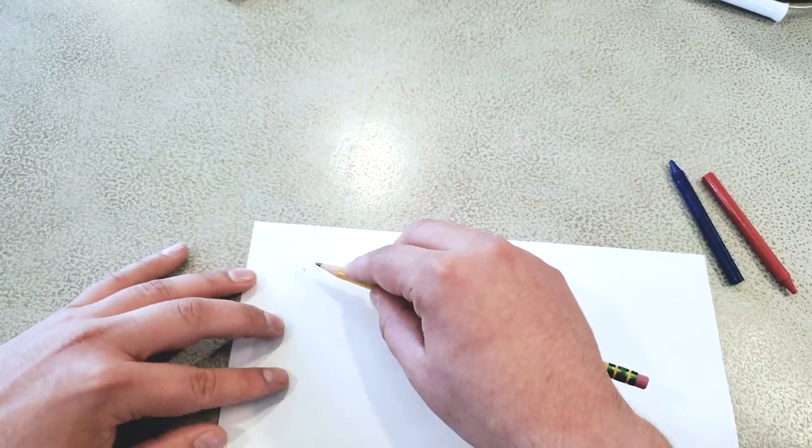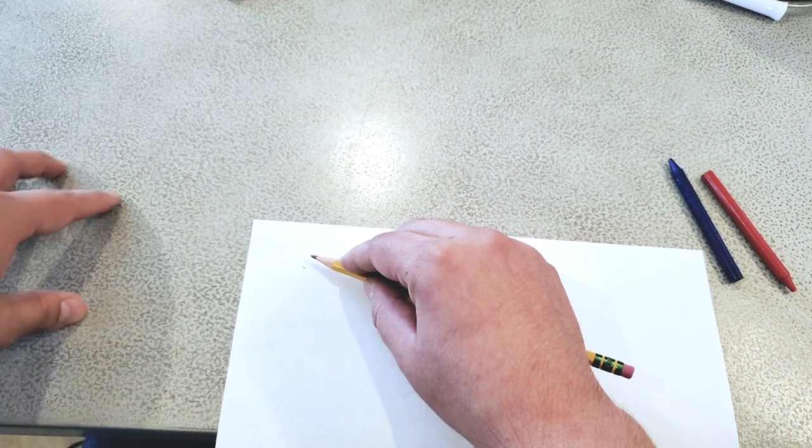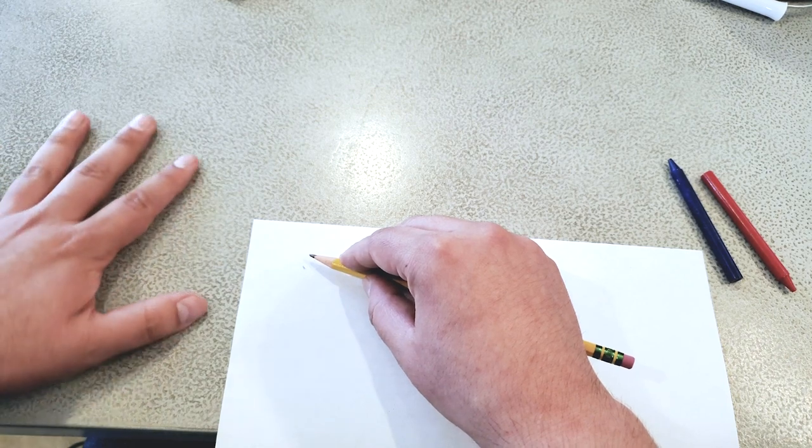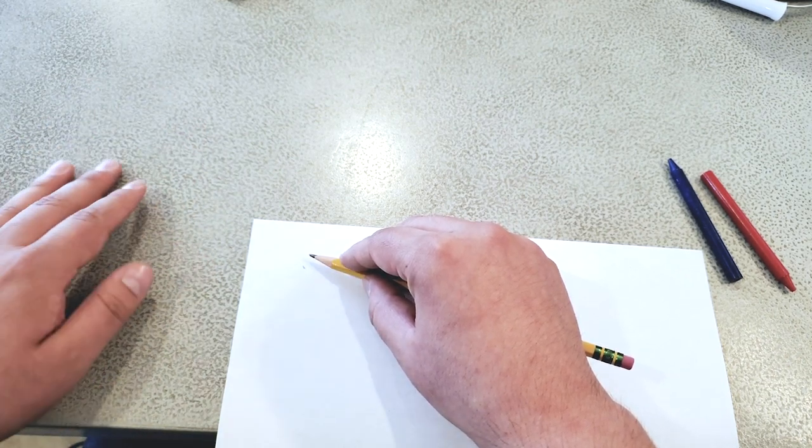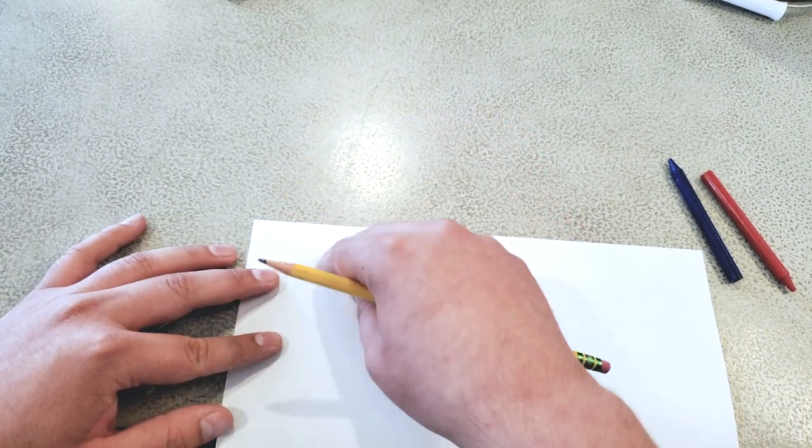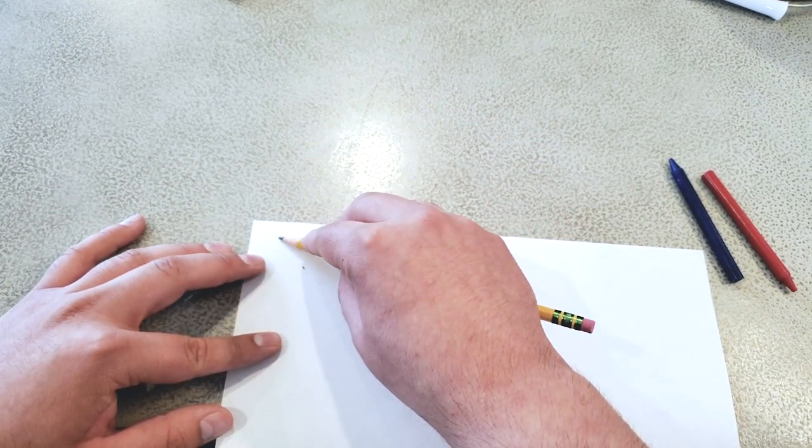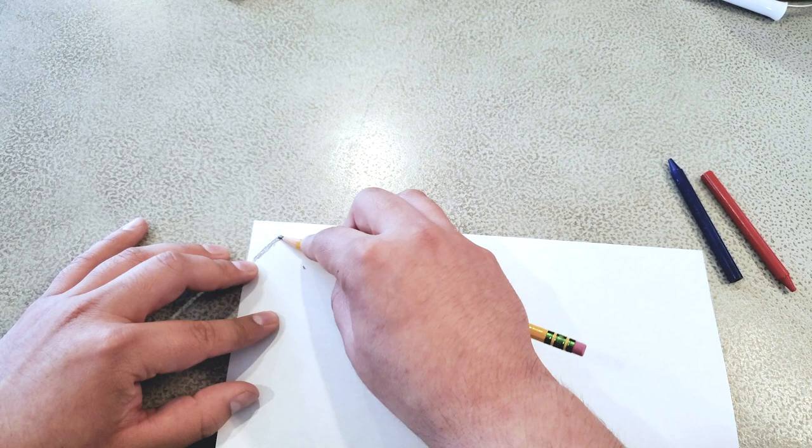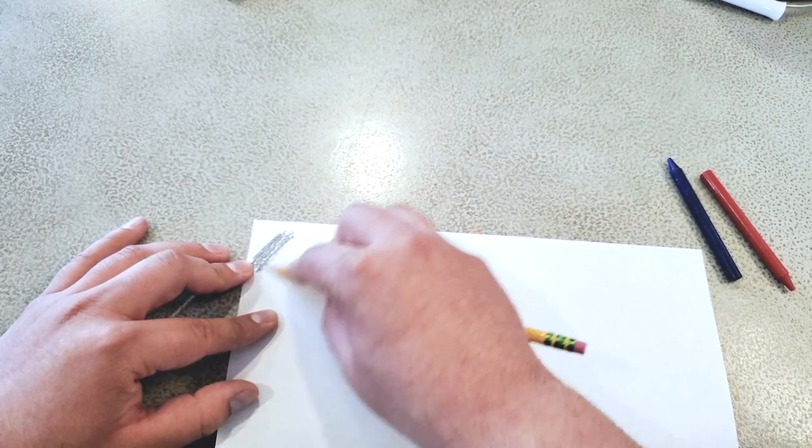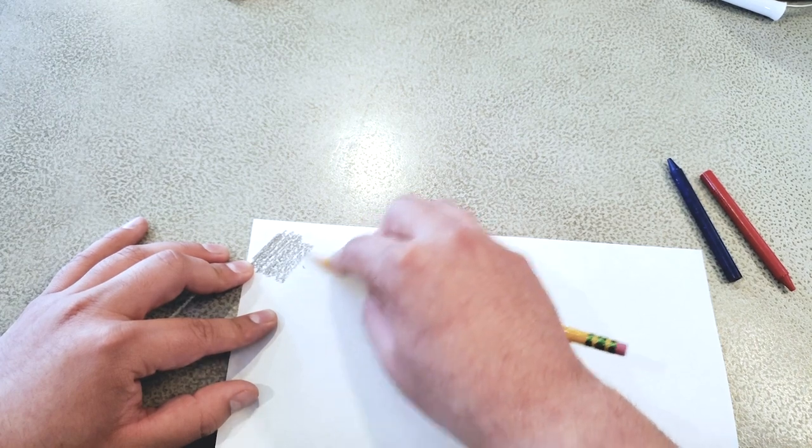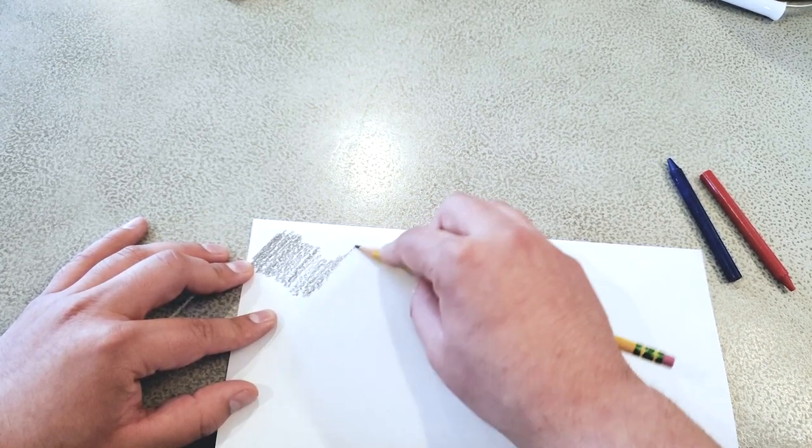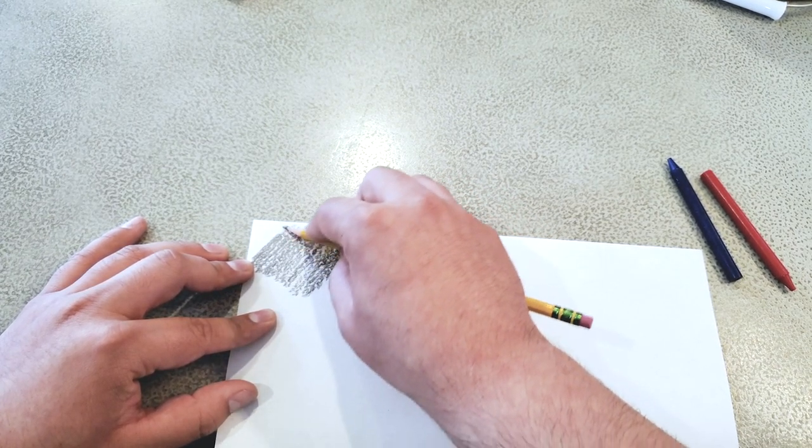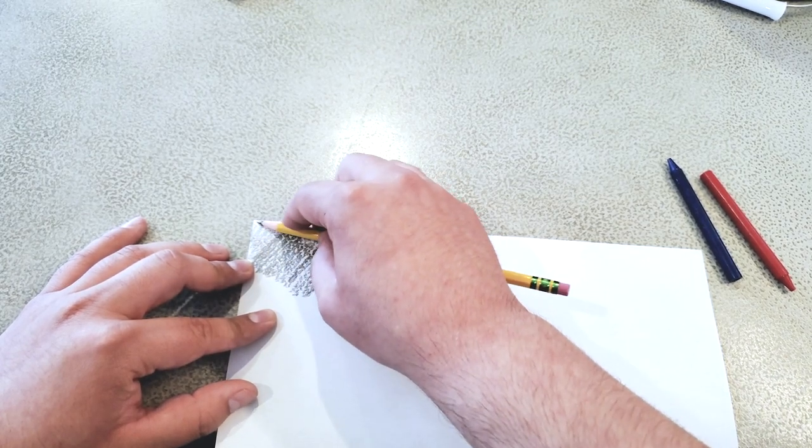So I'm going to bring it a little bit closer. I'm going to take a texture rubbing of my table. You can see that it has actual texture in it. I can feel it, it feels soft. But I want to transfer this texture onto my paper. And so what I'll do is I'll put the pencil down, kind of lay it down on its side, and rub the pencil back and forth.